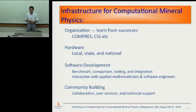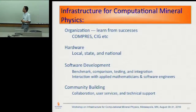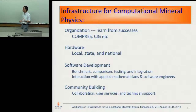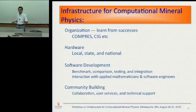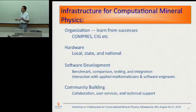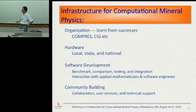This is my last slide with my vision of what will help the community. First, we need to think about what kind of organization will help us — we are not the first group to do this, so we need to learn from successful examples like COMPRES or CIG. For hardware, nowadays those of us who do computation have local facilities and support at the state and university level, and TerraGrid is really helpful. Since NSF has funded TerraGrid, it's difficult to justify requesting additional hardware. But we do need a lot of help from software developers — using this thermal transport code as an example.